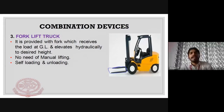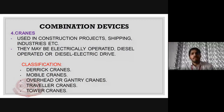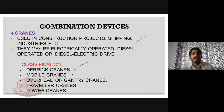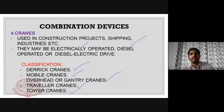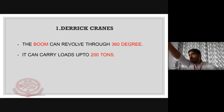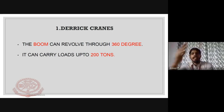Now we come to cranes. Cranes are used in construction projects, shipping industries, etc. They can be electrically operated or diesel operated. There are five types: derrick cranes, mobile cranes, gantry cranes, traveler cranes, and tower cranes.